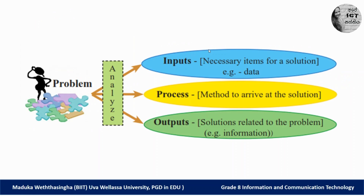Now we are going to identify what is meant by input, process, and output. Input means what items we need to solve the problem — necessary items for a solution. Process means the methods to arrive at a solution — what methods we have to follow to reach the final solution. Output means the solution related to the problem. We have a problem; by using the process we solve it, and the final output is the result of the problem.